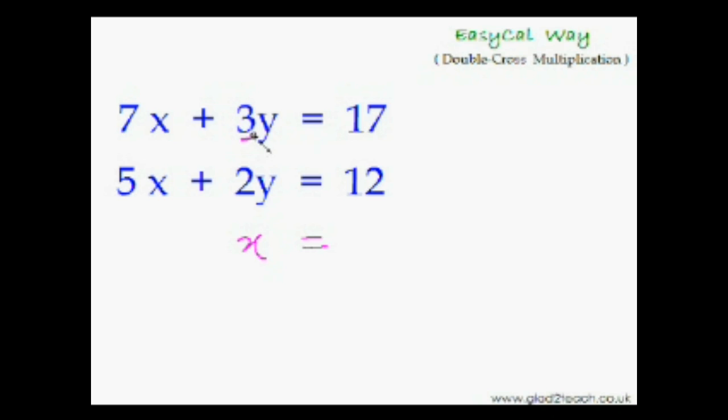As simple as that. So 3 times 12 is 36 minus 2 times 17 is 34. And we get our numerator that is the top part of the fraction. So now let's find the denominator as well. So once again using this 3 as the starting point cross multiply this side as well 3 times 5 is 15 minus 2 times 7 is 14. Now we can easily simplify this 36 minus 34 is 2 and 15 minus 14 is 1. That means x is equal to 2. See it's so simple.